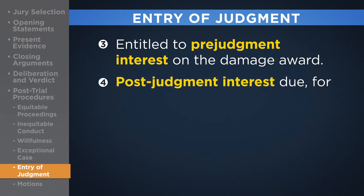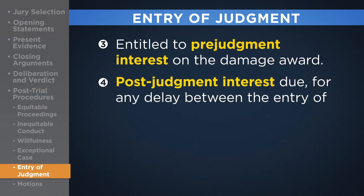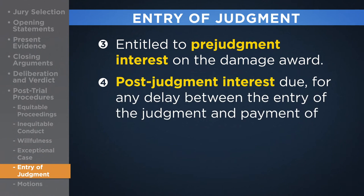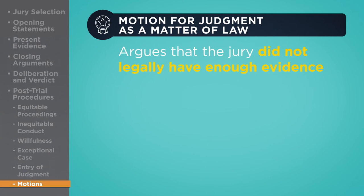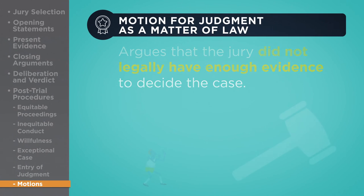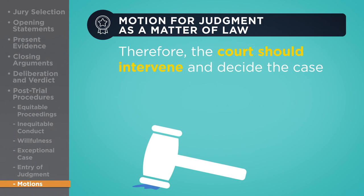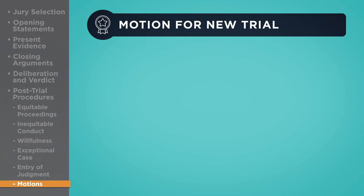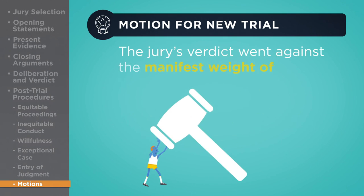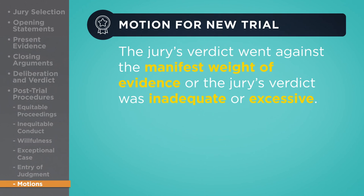The judgment may also set forth the post-judgment interest due for any delay between the entry of the judgment and the payment of the award. A motion for judgment as a matter of law, or JMOL, argues that the jury did not legally have enough evidence to decide the case; therefore, the court should intervene and decide the case in favor of the party moving for the JMOL. JMOL motions are usually accompanied by a motion for a new trial, arguing that the jury's verdict went against the manifest weight of the evidence or was grossly inadequate or excessive.